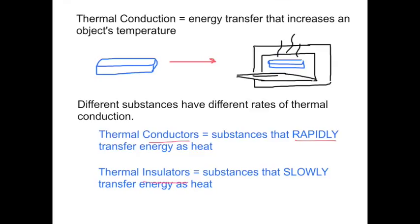Thermal insulators are substances that slowly transfer energy as heat. So an example of a thermal conductor would be a metal pan going into the oven, which will heat up rather quickly. However, a cloth oven mitt that you use to remove the pan from the oven will transfer heat more slowly, making it possible for you to touch the pan without burning your hands.